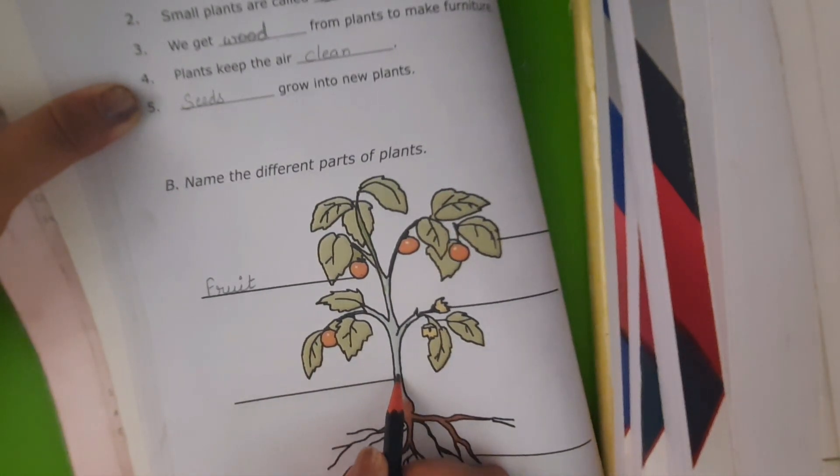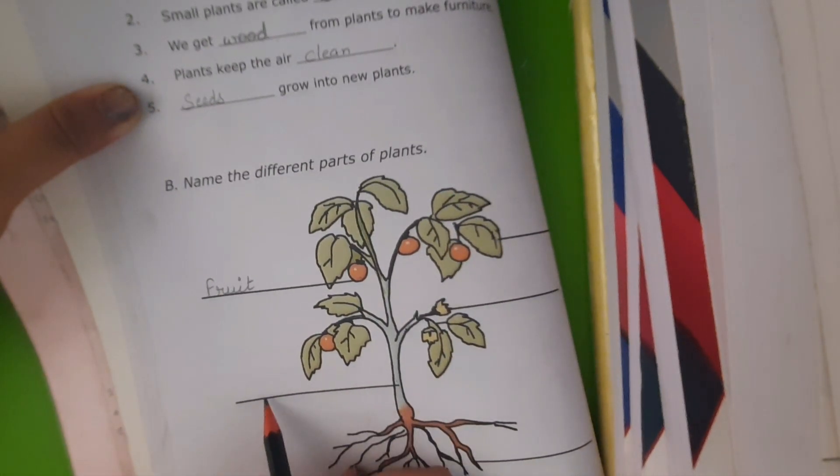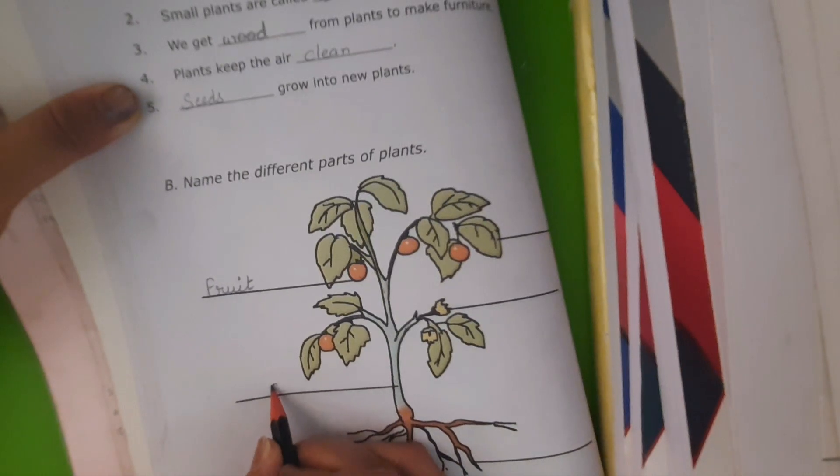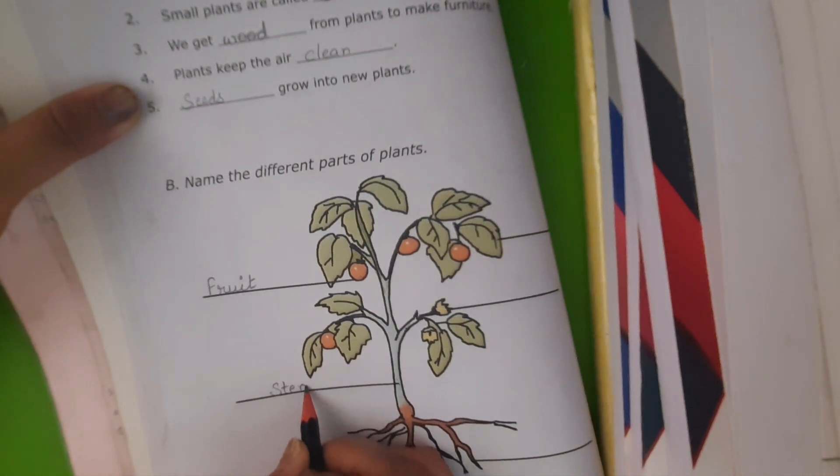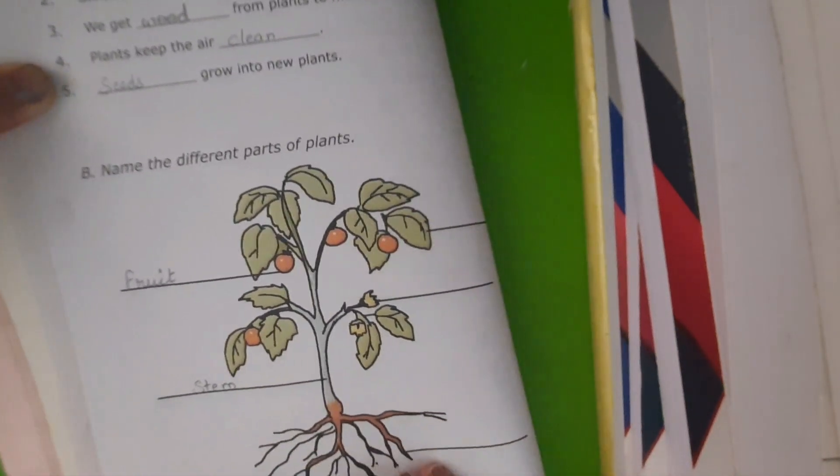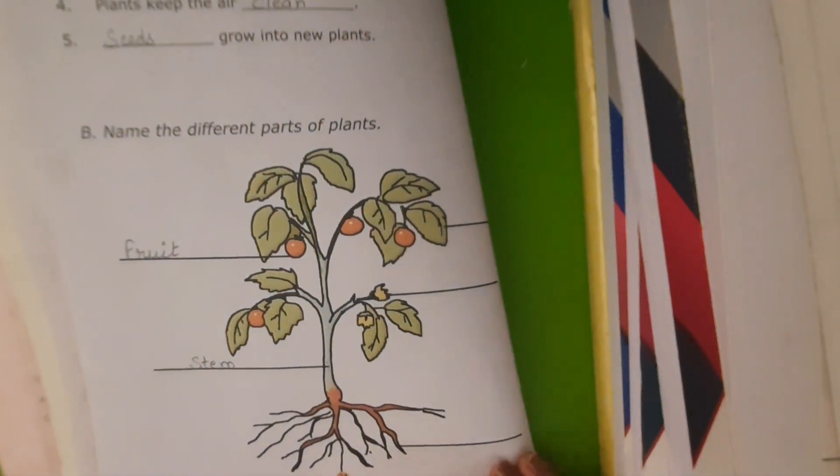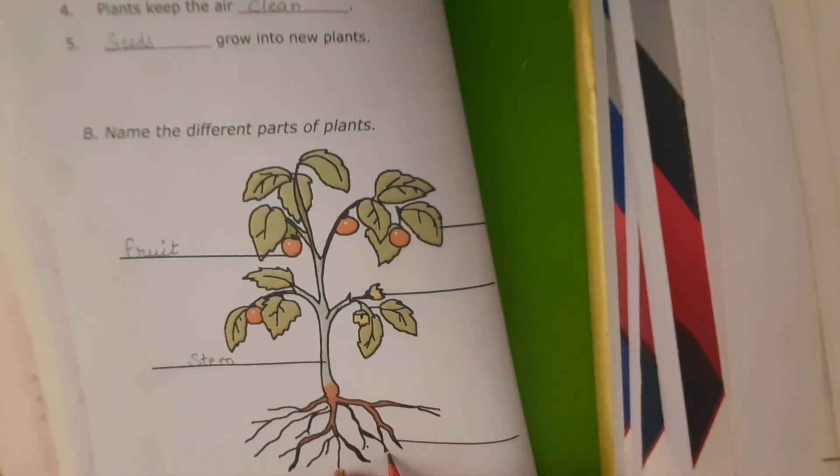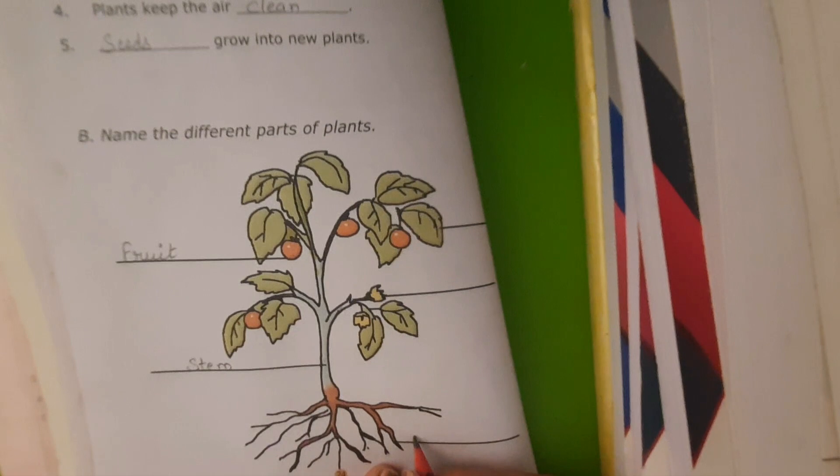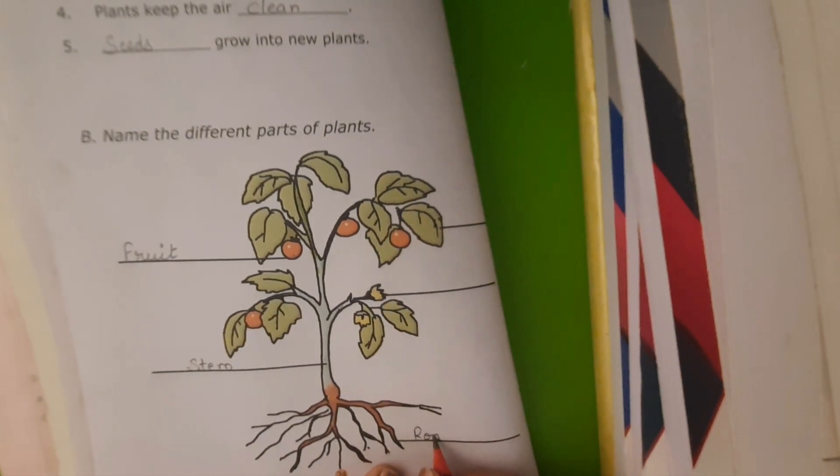Which part is this? Yes, tell me. Right, this is stem. Which part of the plant is this one? These are roots.